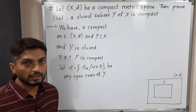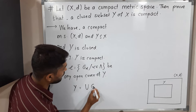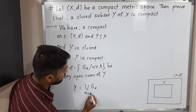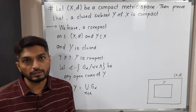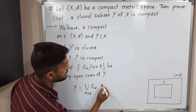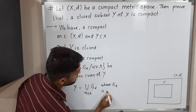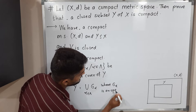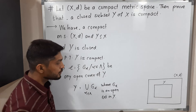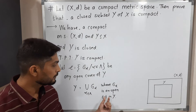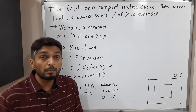So I am considering any open cover of Y. Obviously it will cover Y, so Y equals the union of G_alpha, alpha belonging to lambda. It is an open cover, so each set G_alpha is an open set. I should mention where — G_alpha is an open set in Y.